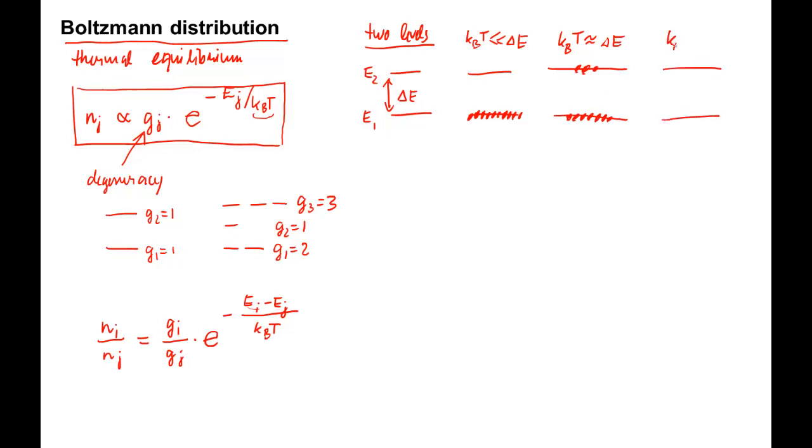Lastly, if KBT is much larger than delta E, this is called the high temperature limit, both states will have equal populations.